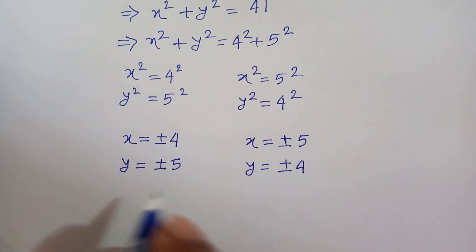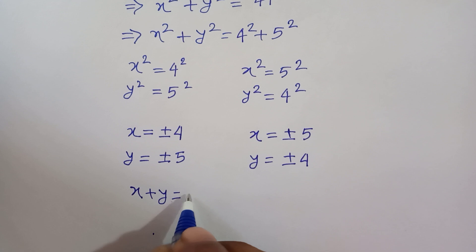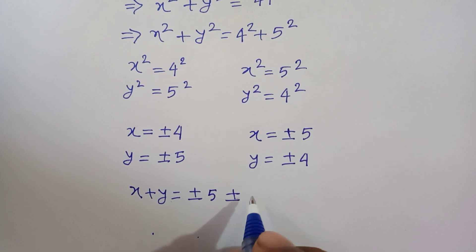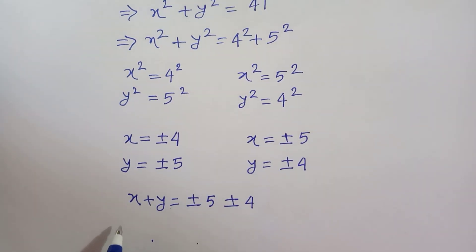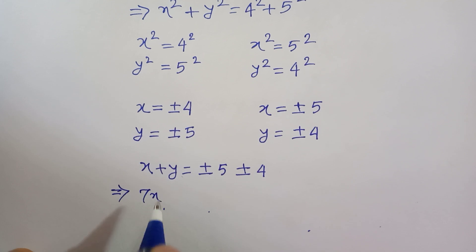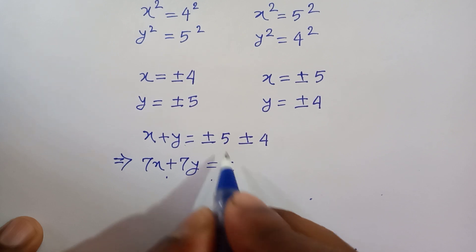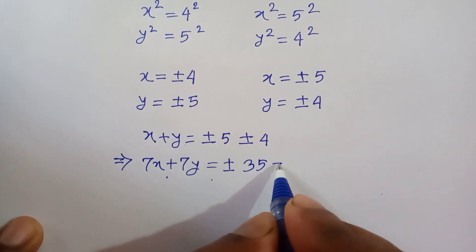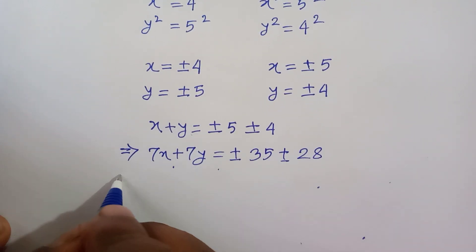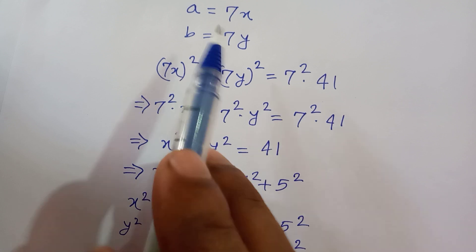In both cases, x plus y is equal to plus or minus 5 and plus or minus 4. Now multiplying both sides by 7: 7x plus 7y is equal to plus or minus 5 times 7, which is 35, plus or minus 4 times 7, which is 28.